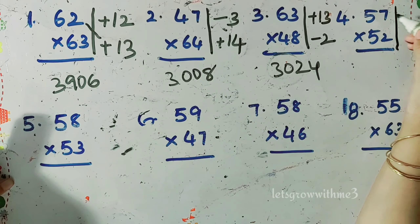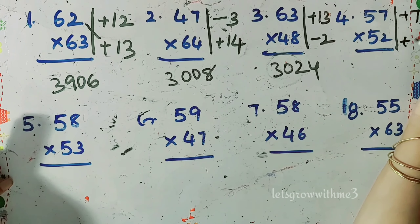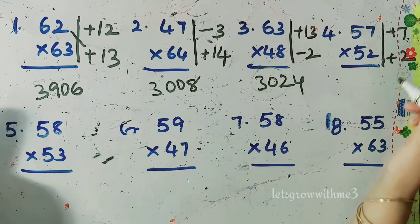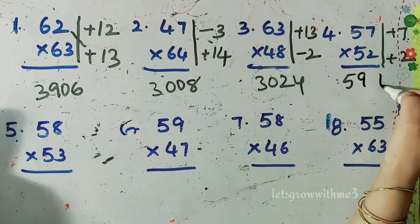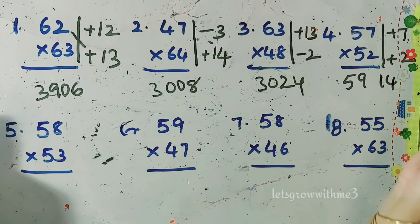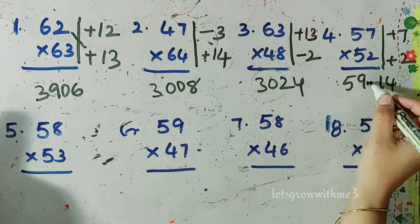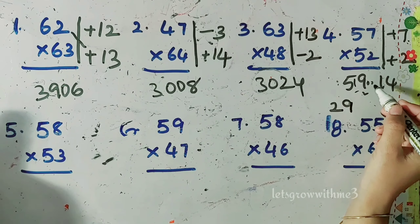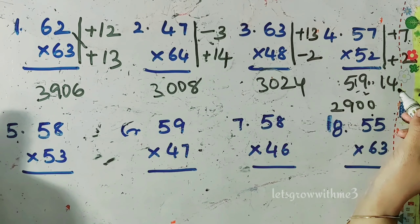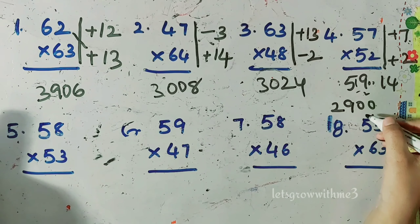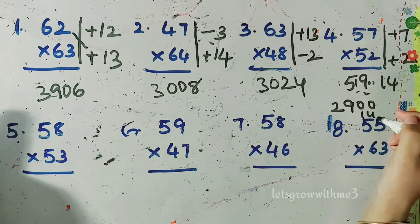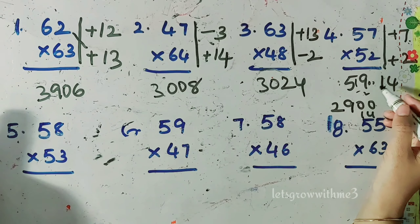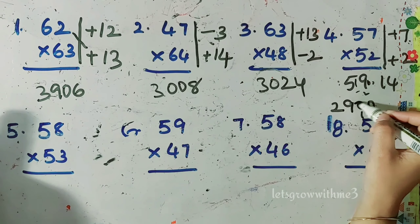Next question: the deviations from 250 are plus 7 and plus 2. We do cross addition — 252 plus 7 gives 59, and 7 times 2 is 14, a positive 14. Now find the base 50 value: 5900 divided by 2. Working through the division — 5 twos are 10, 9 twos are 18 with remainder 1 — the base 50 value is 2950. Then add 14 to get the answer 2964.